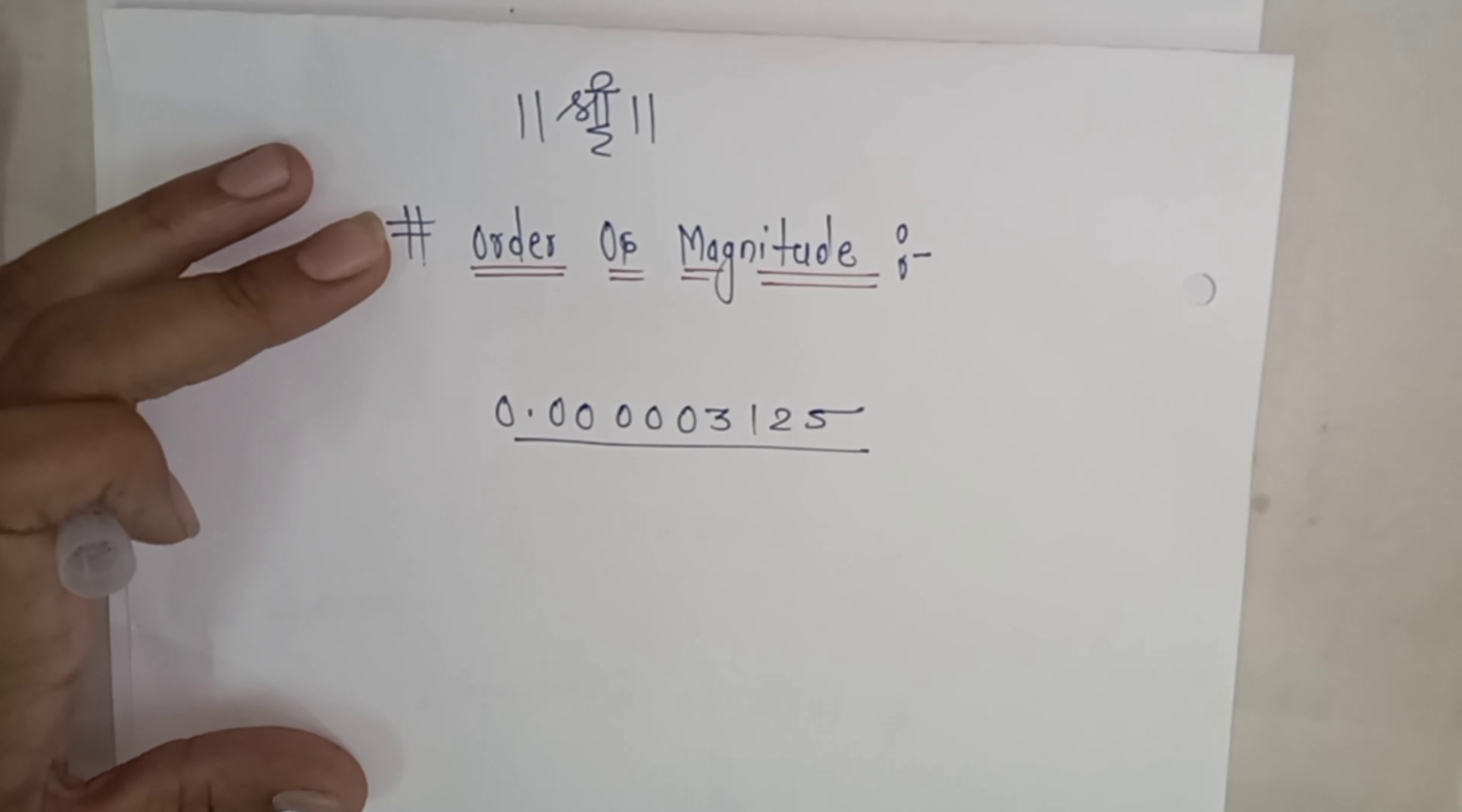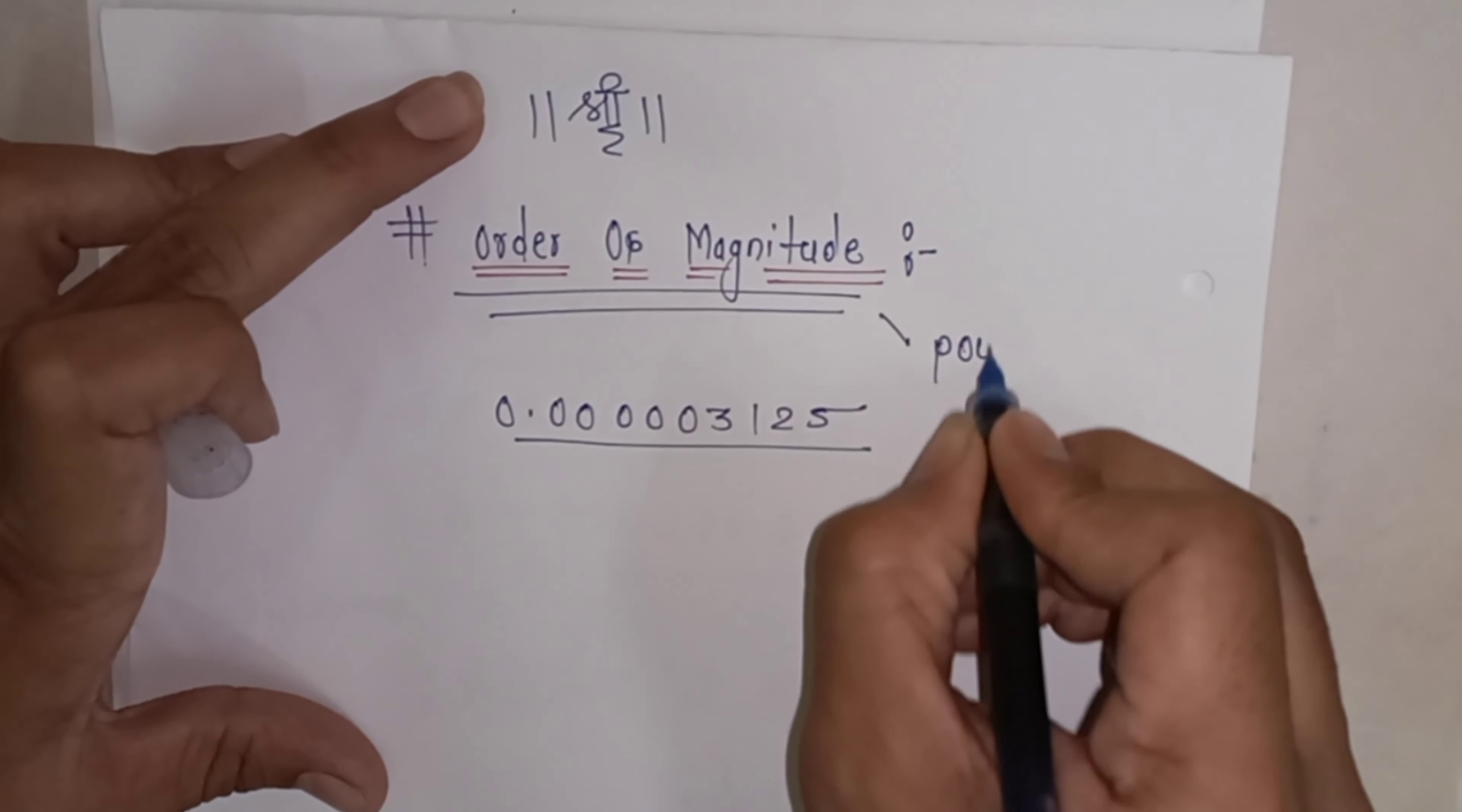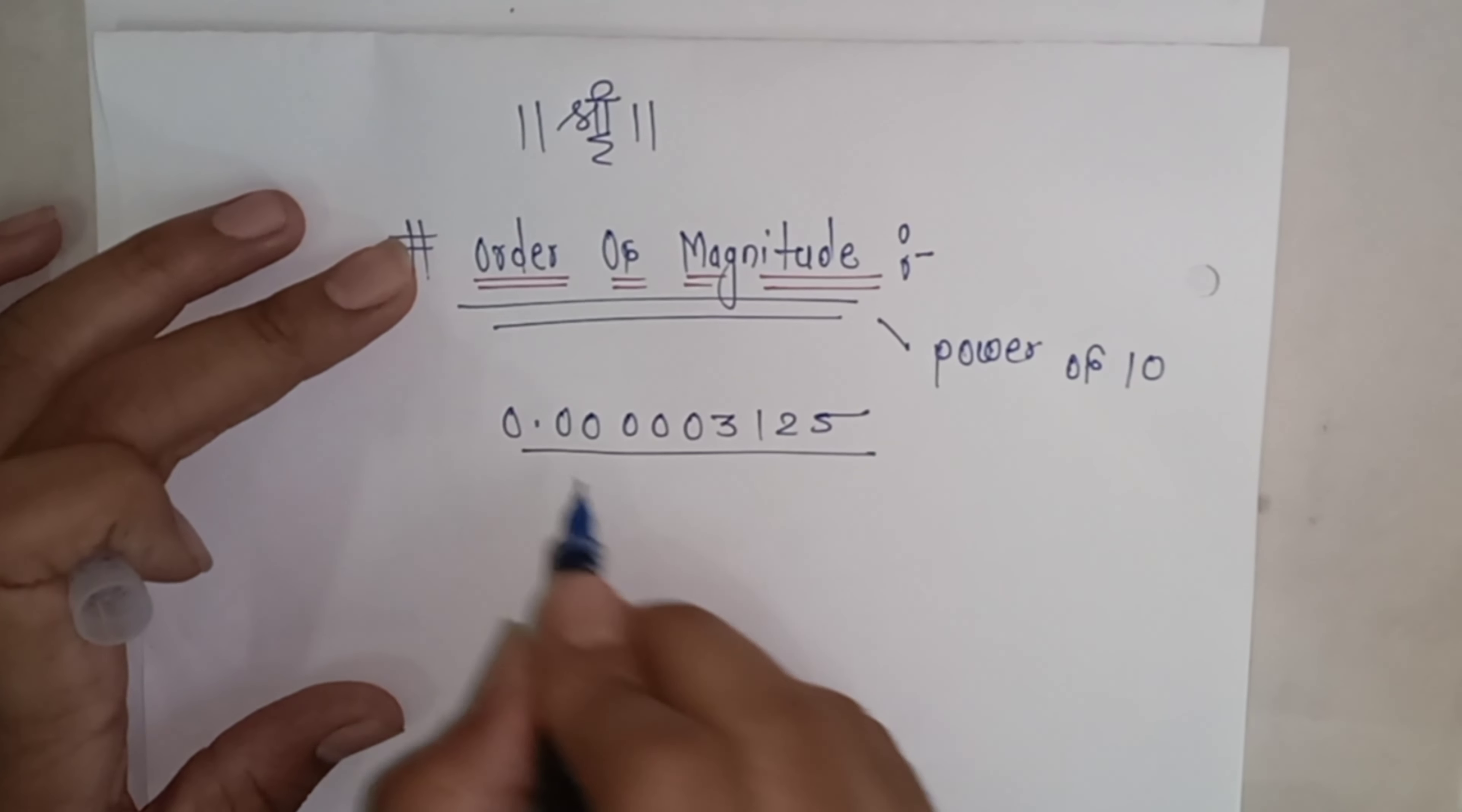We need to convert this given number to order of 10, or represent this number in order of 10. This is what we call order of magnitude. In simple terms, order of magnitude means power of 10.